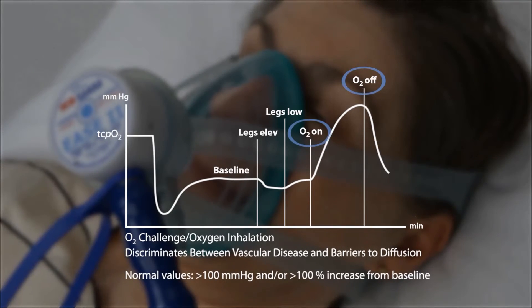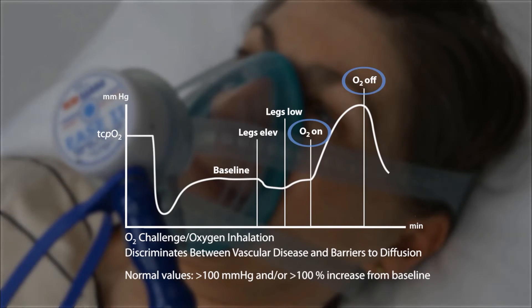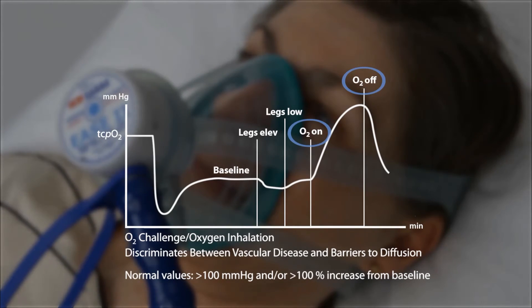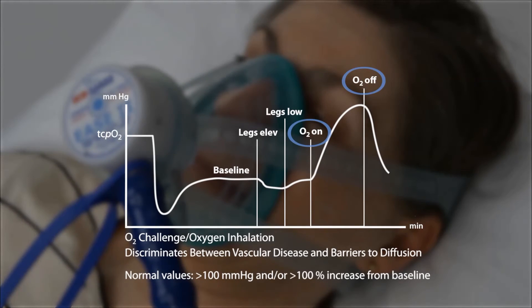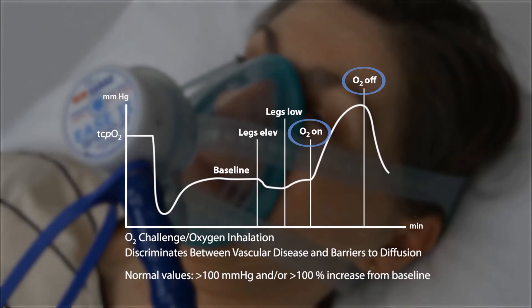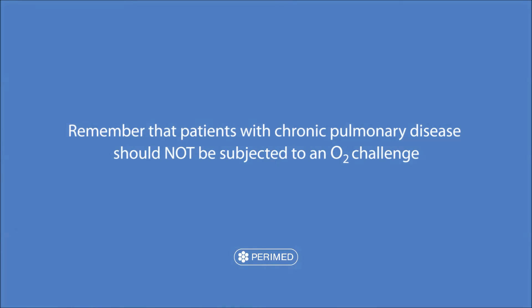If the oxygen challenge reports values higher than 100 millimeters of mercury, or more than 100% increase from baseline, the low baseline value was caused by edema or inflammation, and not by PAD or capillary impairment. This also means that the patient may respond well to hyperbaric oxygen therapy. Remember that patients with chronic obstructive pulmonary disease should not be subjected to an oxygen challenge.